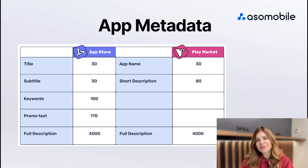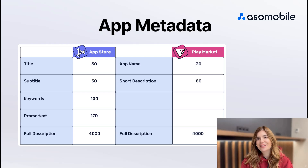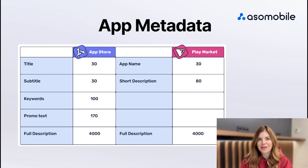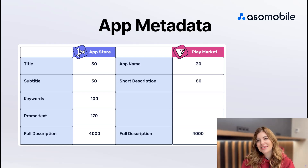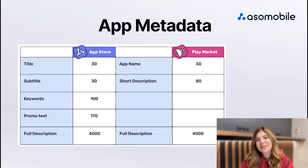Now let's shift our focus to the Google Play Store. Here, the app title also has a 30-character limit. The short description, limited to 80 characters, is what users see in search results and needs to be attention-grabbing. The long description can be quite extensive with a maximum of 4,000 characters. Unlike the App Store, in Google Play the app description carries significant weight in indexing. You should include keywords while ensuring the text remains user-friendly and compelling.